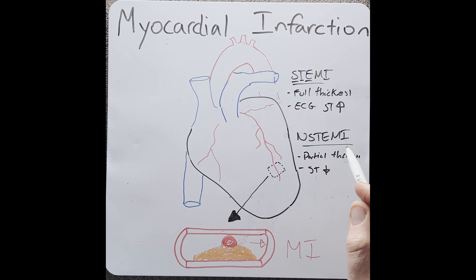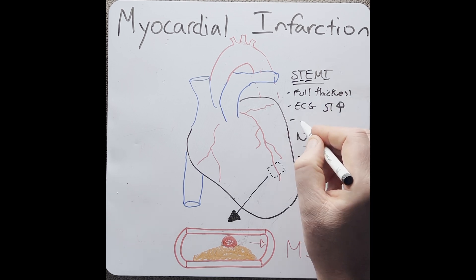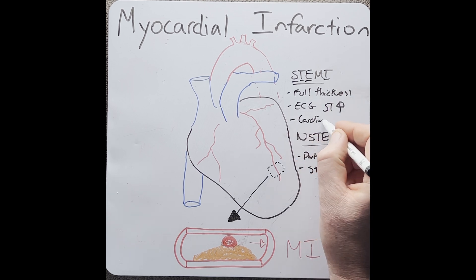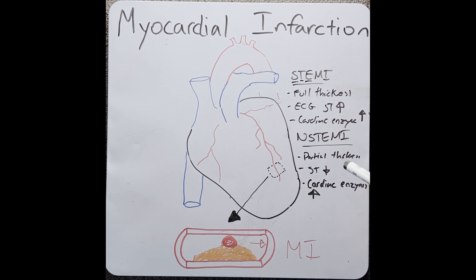Because there is muscle cell death in both types, we see elevated cardiac enzymes. These cardiac enzymes are released in the blood and include troponin and creatine kinase. So both the ECG and the cardiac enzymes are the way that MIs are diagnosed.